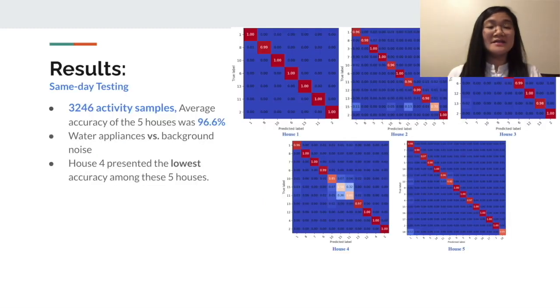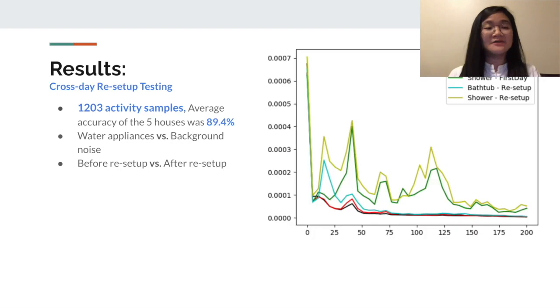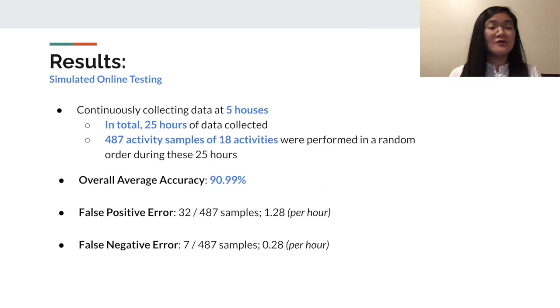In the Sunday testing, the average accuracy of the five houses was 96.6%. After resetting up the system, the average accuracy of the five houses was 89%. Across all five houses, the average accuracy for simulated online testing was 90.99%. As listed, we are showing the overall average accuracy of the 487 samples of 18 activities collected in 25 hours.